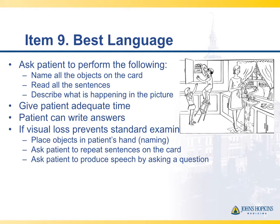Item nine is language assessment, and you have several tools on your stroke scale cards to help. We assess naming, repetition, and comprehension. The cookie jar picture is useful — when you have the patient describe what they see, you get an idea of their fluency, naming, and whether they may have attentional deficits to one side of space. You can also use naming cards, have them read, or have them write, which is useful in the intubated patient.